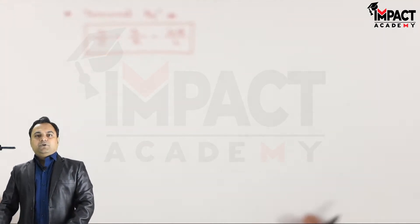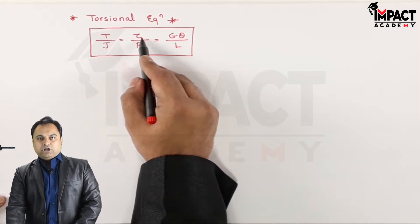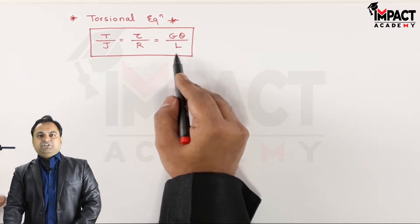Now this is the torsional equation. It is written as T/J = τ/R = Gθ/L.